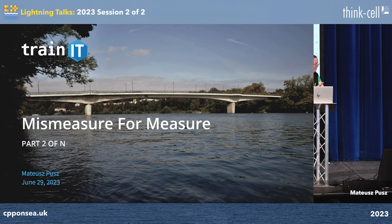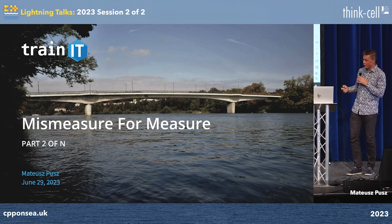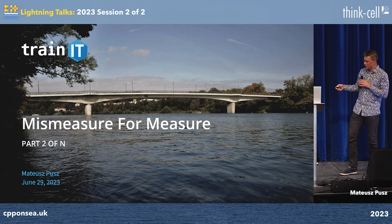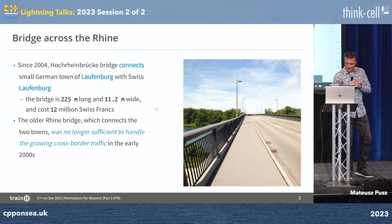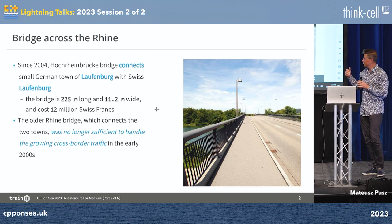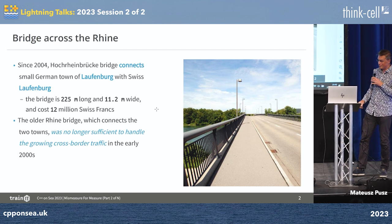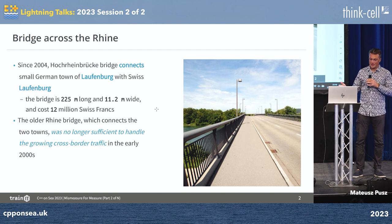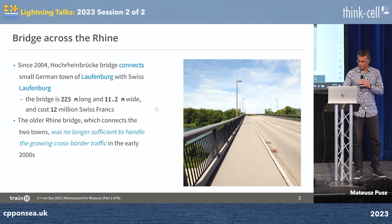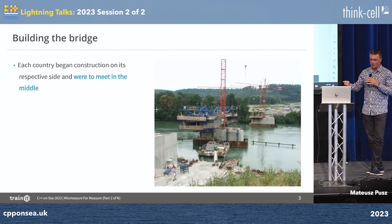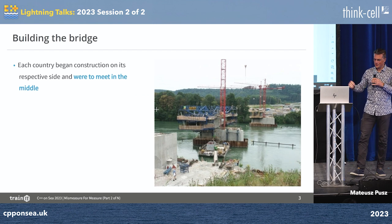Yesterday we spoke about the Mars Climate Orbiter. Today it's time to talk about a bridge — not any bridge, a particular bridge in Laufenberg, between Switzerland and Germany. Actually there are two cities in both countries with the same name, and the bridge connects them. The bridge was built starting in 2004, by two teams starting from both different sides of the river.